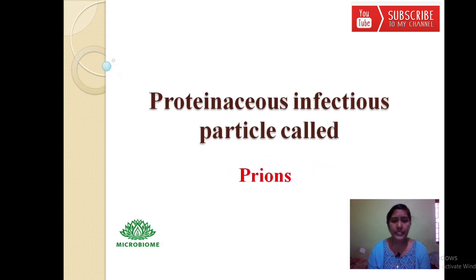A proteinaceous infectious particle is called a prion, characterized by abnormal folding of cellular proteins. Major prion diseases include scrapie in sheep, bovine spongiform encephalopathy (BSE) in cattle, and chronic wasting disease in deer and elk. In all cases, degeneration of the brain occurs, ultimately leading to death.